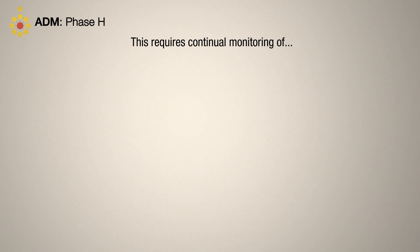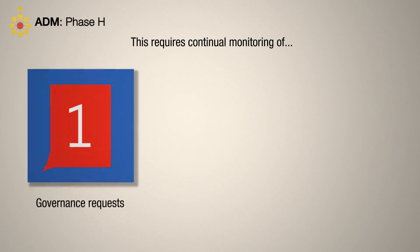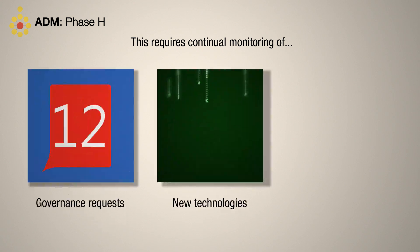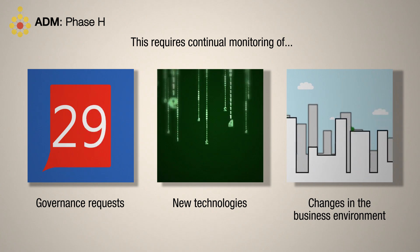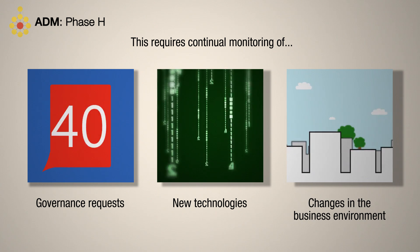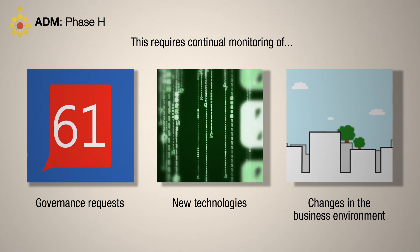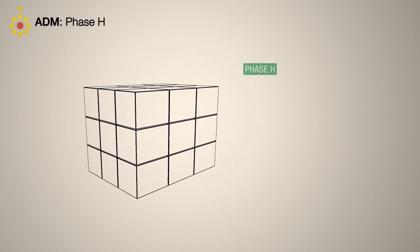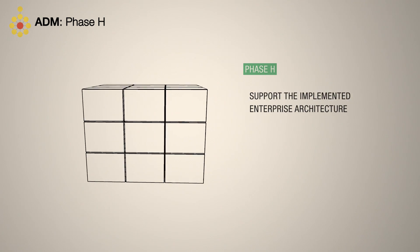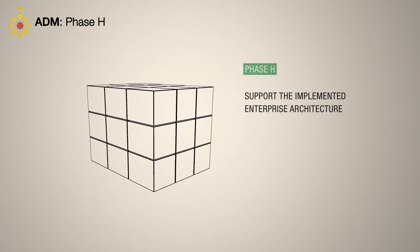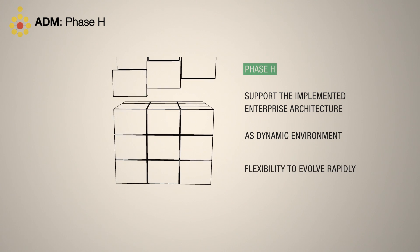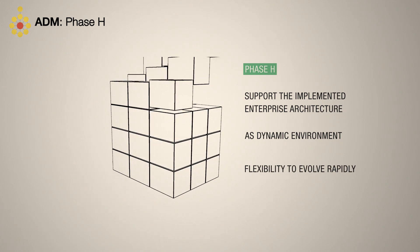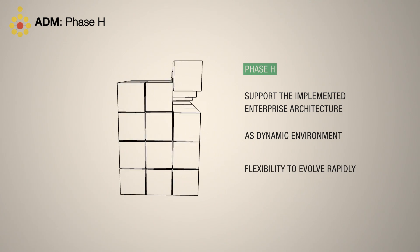Typically this requires continual monitoring of governance requests, new technologies, or changes in the business environment. The process should support the implemented enterprise architecture as a dynamic environment that has the flexibility to evolve rapidly in response to these changes.